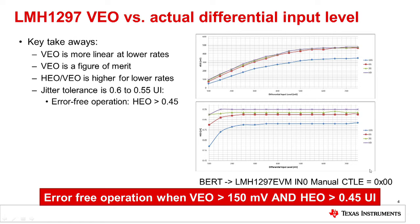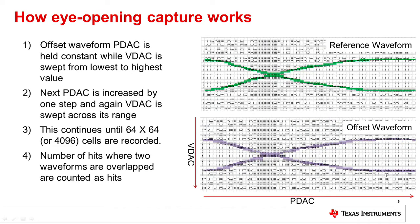Next, let's see how the eye diagram is captured internally. More importantly, we discuss how the 64 by 64 cells data is streamed out of the device. To visualize this, imagine we have two waveforms: a reference waveform and an offset waveform that is superimposed on the reference waveform. We put a 64 by 64 cell window on top of these two waveforms.